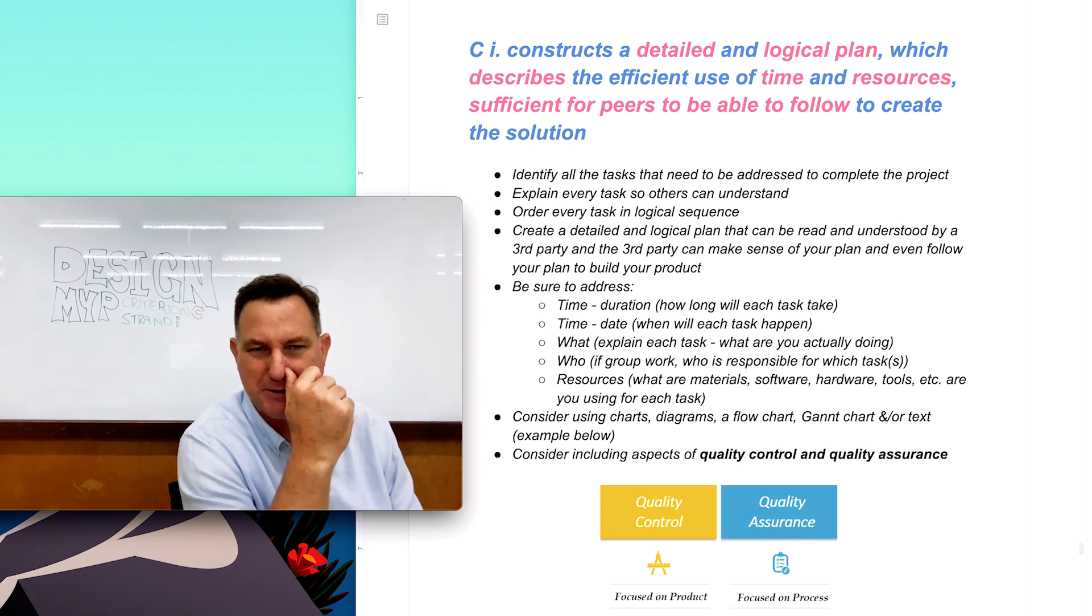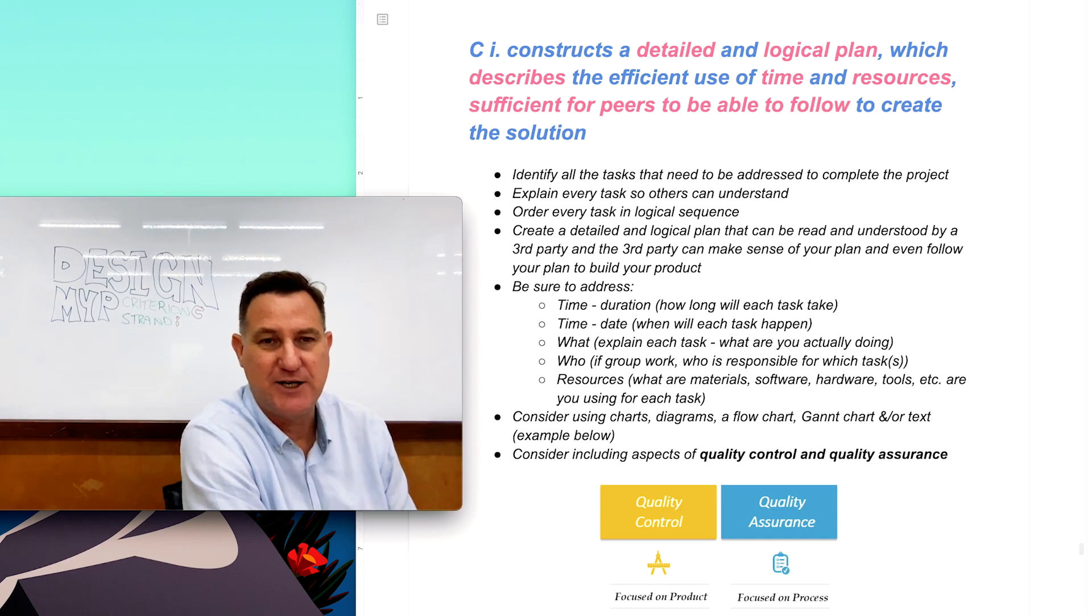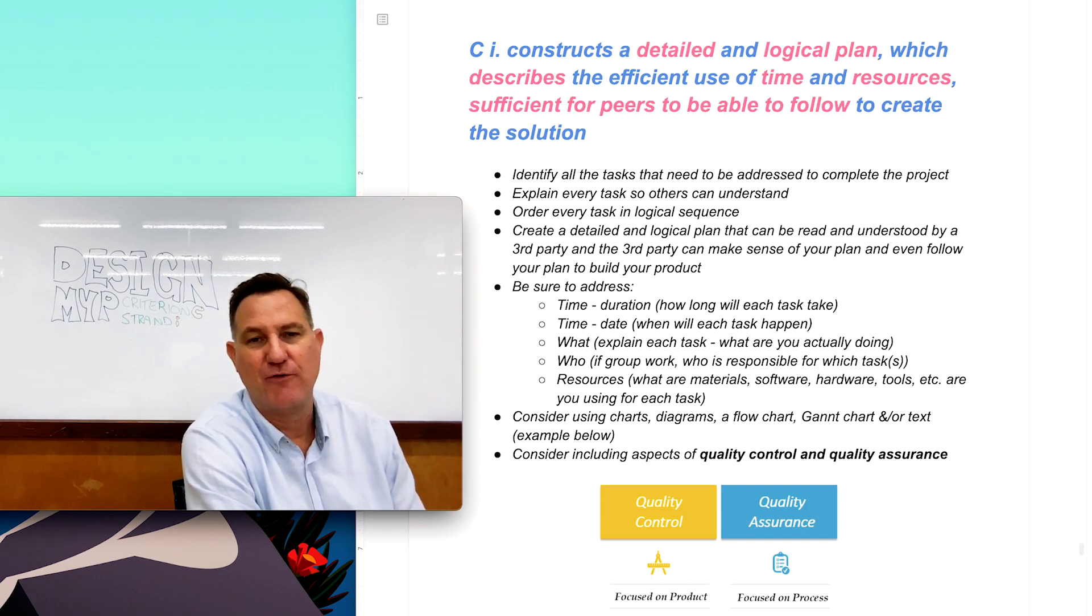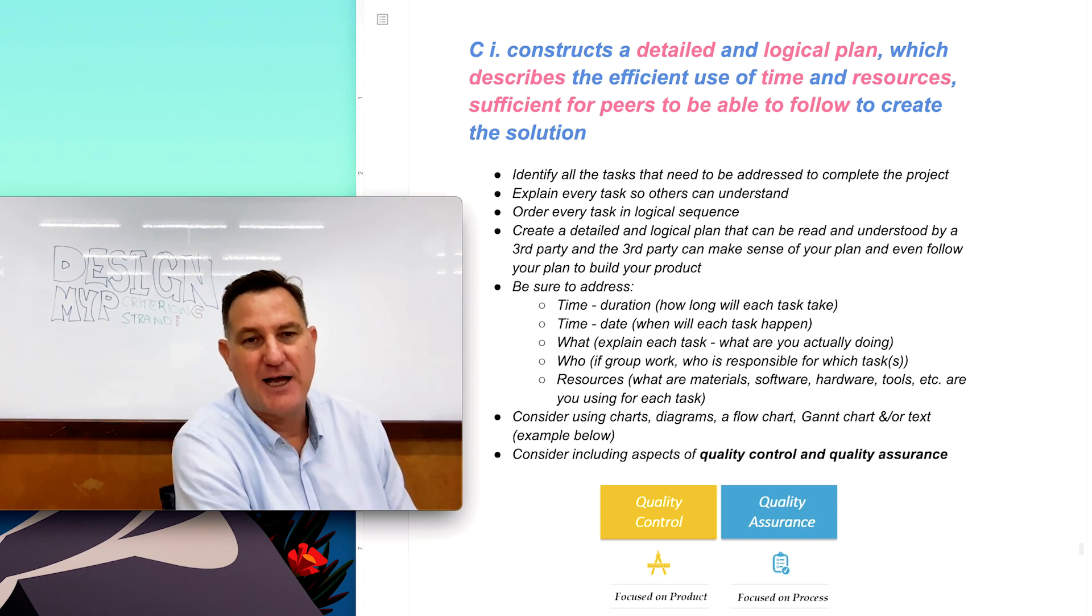So first of all let's have a close look at the assessment criteria for Criterion C Strand 1. It says here you need to construct a detailed and logical plan. I've highlighted the word detailed and logical. It describes the use of time, resources, and it should be sufficient for peers to follow and create the solution.